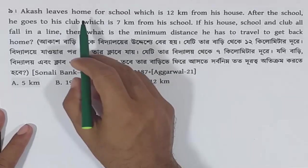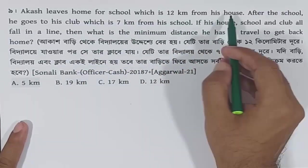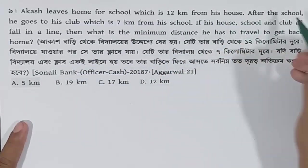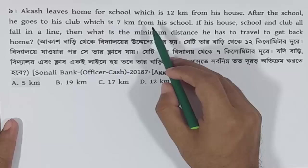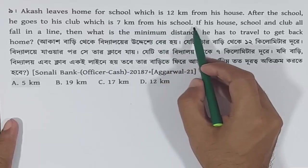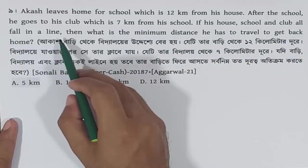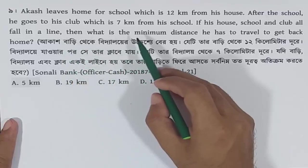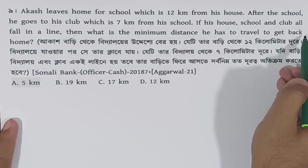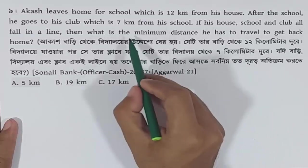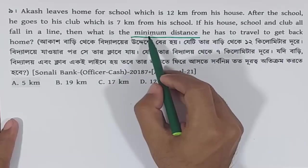The next question: Akash leaves home for school, which is 12 km from his house. After school, he goes to his club, which is 7 km from his school. If his house, school, and club all fall in a line, what is the minimum distance he has to travel to get back home?